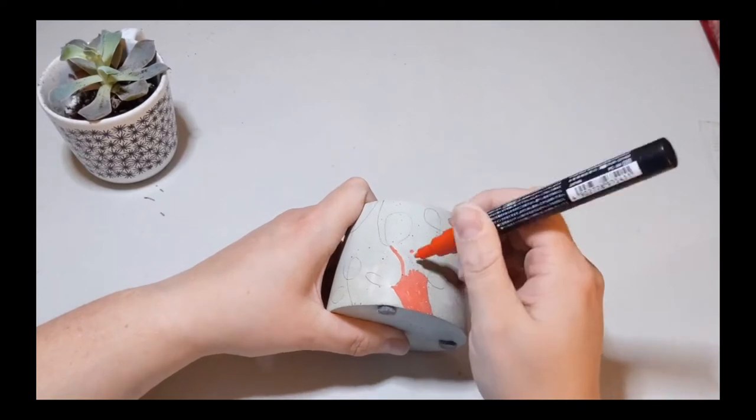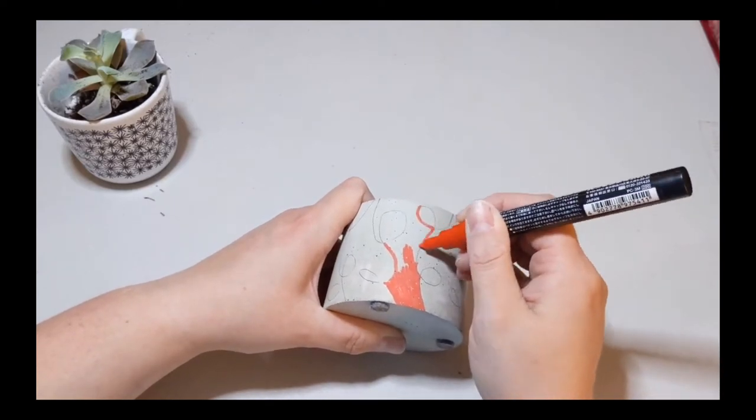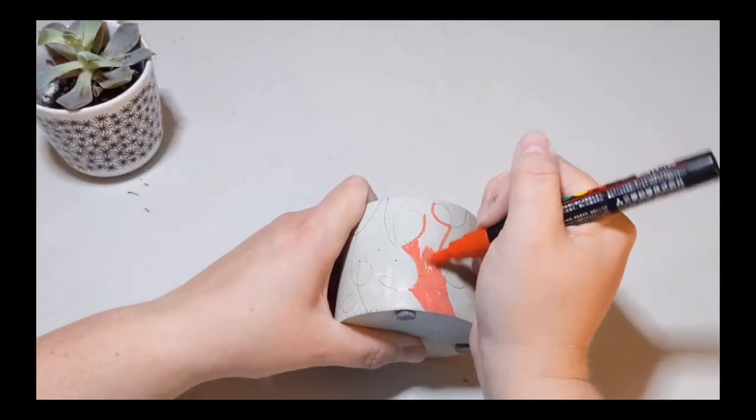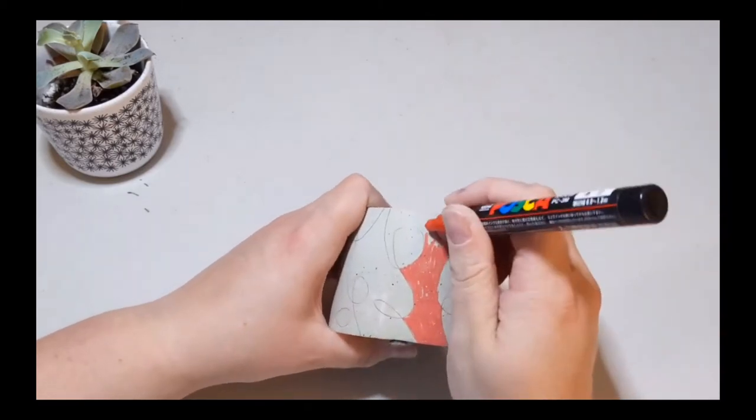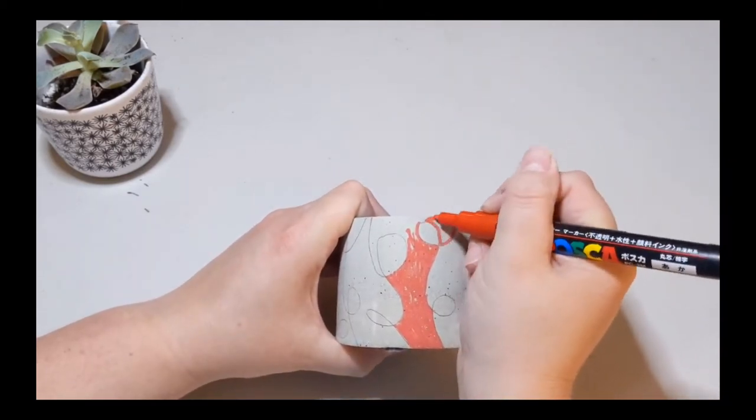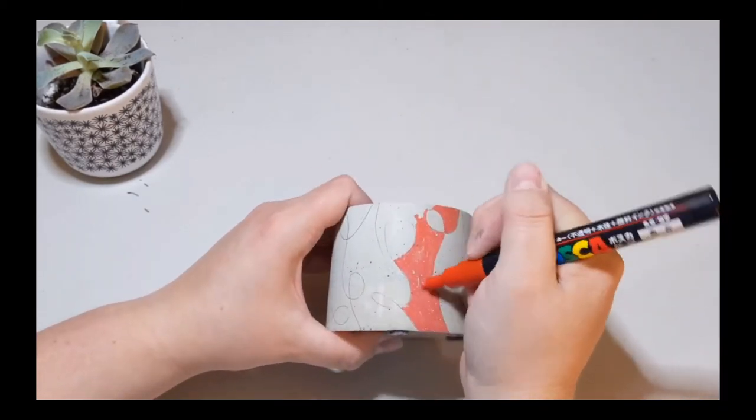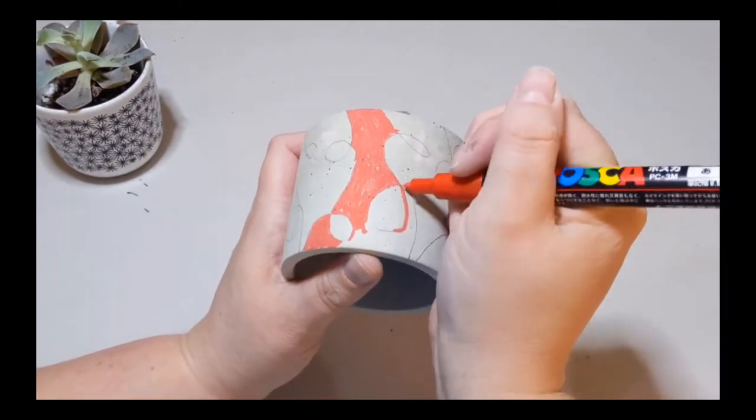And here we go, starting with the first color. I don't really know what to say while we're watching this. There you can see me trying to get some more paint to come out faster. If you have any tips on Posca pens, leave a comment and let me know how you get them to work.